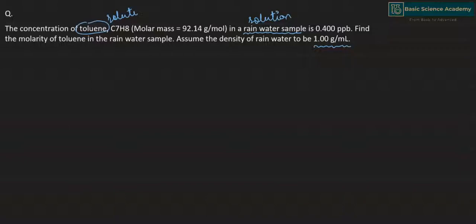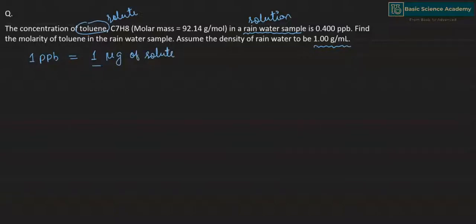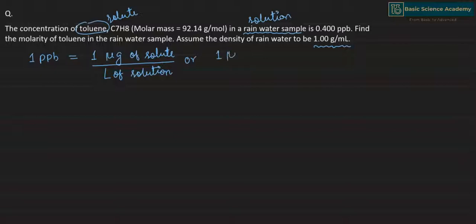The density of the solution is 1 gram per mL. Whenever the density of the solution is 1 gram per mL, we use the conversion factor: 1 ppb, which is parts per billion, equals 1 microgram of solute per liter of solution, or simply 1 microgram per liter.